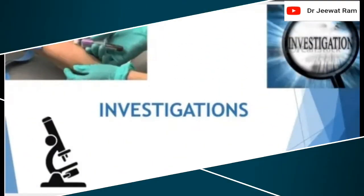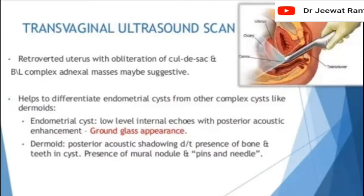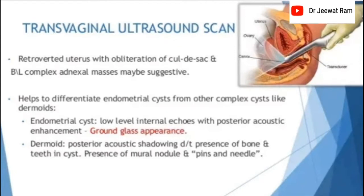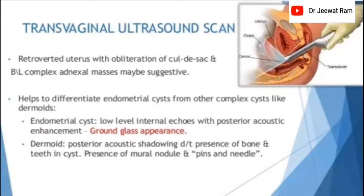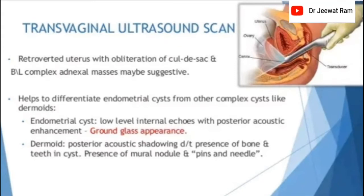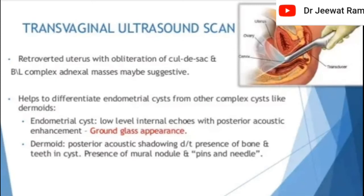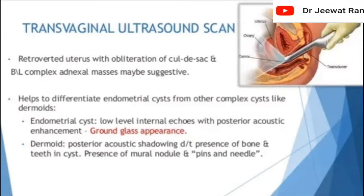Investigations for endometriosis. Transvaginal ultrasound scan: retroverted uterus with obliteration of the cul-de-sac and bilateral complex adnexal mass may be suggestive. Helps to differentiate endometriosis from other conditions like dermoids. Endometrial cysts show low-level internal echoes with posterior acoustic enhancement and a ground-glass appearance. Dermoids show posterior acoustic shadowing, and presence of bone and teeth in cysts, and mural nodule with pins-and-needles appearance.